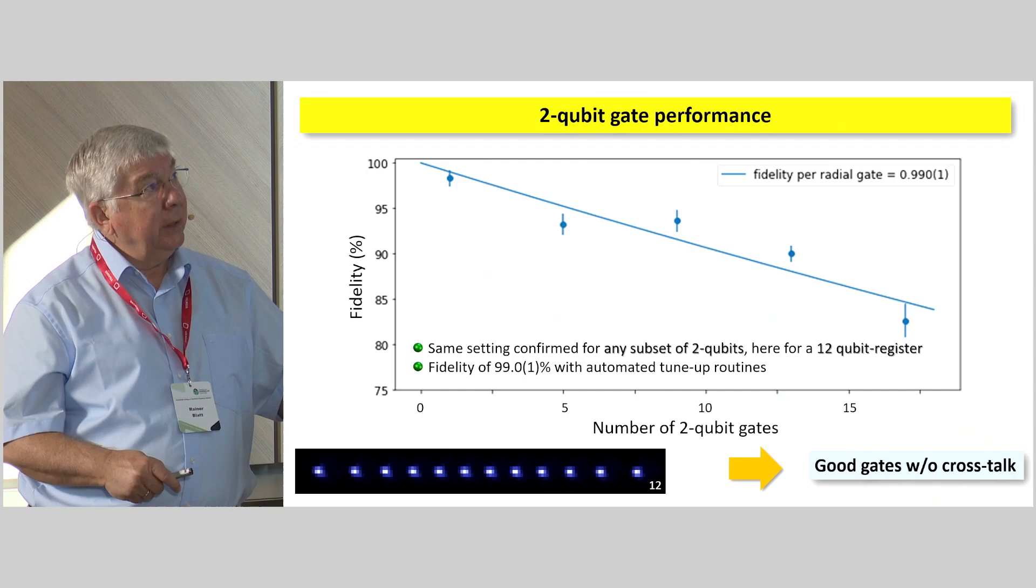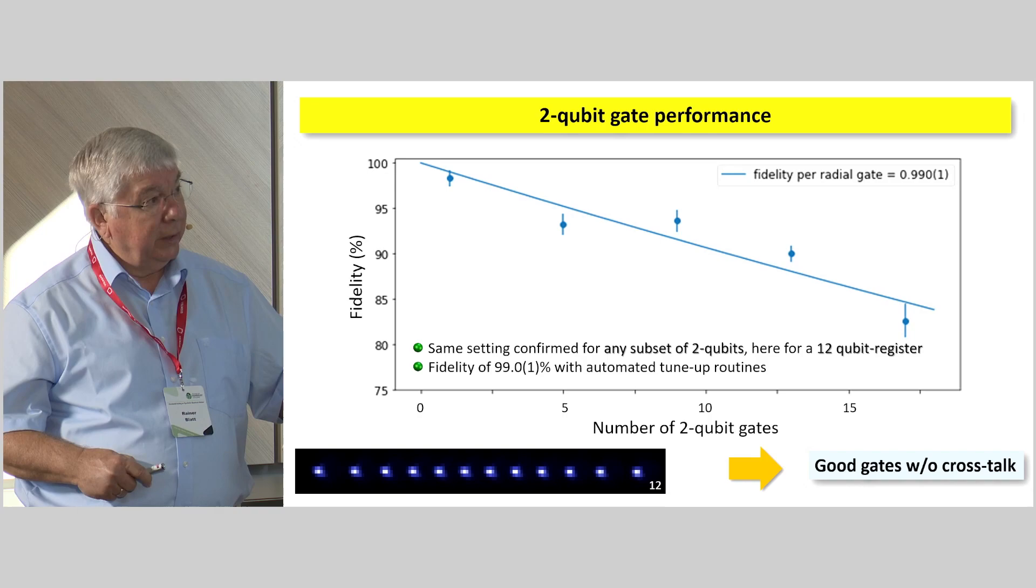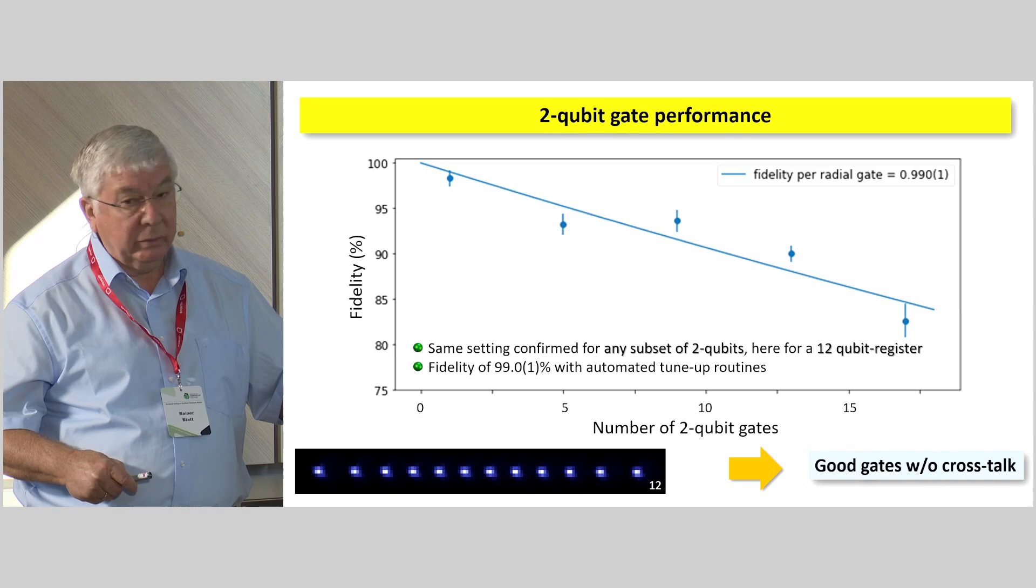Then what about the two-qubit performance? When we just automatically tune it up, say, in a 12-qubit register, for example, the fidelity reaches 99% in about 30 seconds. And so we just, this is one of the automatic tunes. Then this works reasonably well.